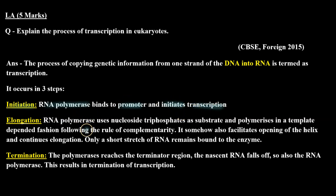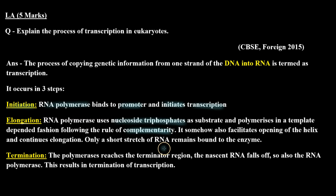Then the RNA polymerase moves along slowly, and nucleoside triphosphates, which are the substrates, are used to make the RNA. The RNA synthesis follows the complementarity rule according to the DNA template strand, so the RNA sequence depends on it. Then the RNA polymerase reaches the terminator, and the terminator ends the transcription.